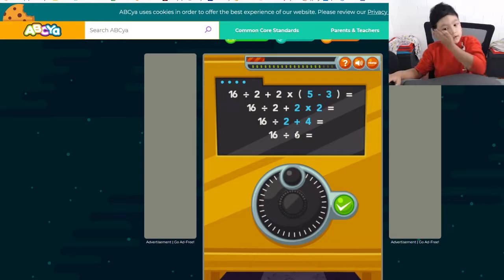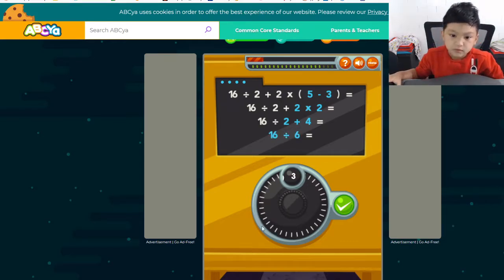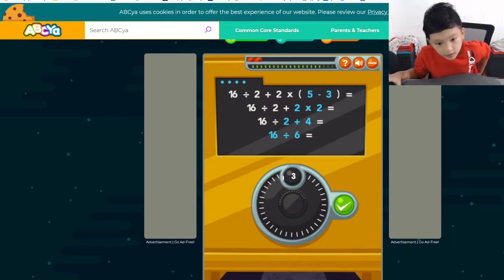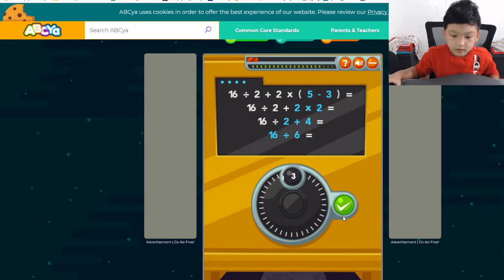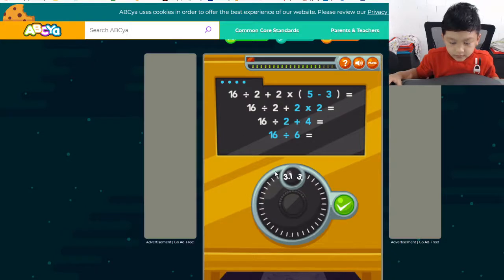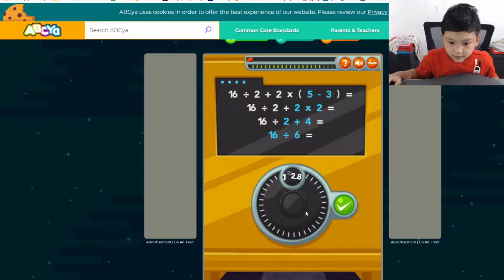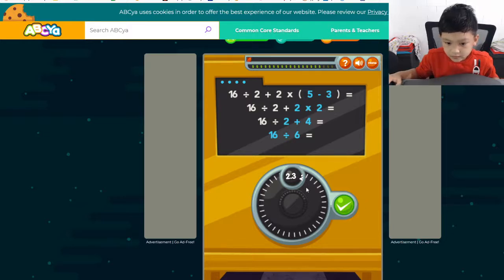This equals 2 and 2 times 2 by 4 plus 4 equals 6. 16 divided by 6 what's 16 divided by 6 let me think. 16 divided by 6 maybe it's 3. Hmm 6 times a lot oh I think I know it's 2 point something i think it's 2.3. Maybe it's 2.2.